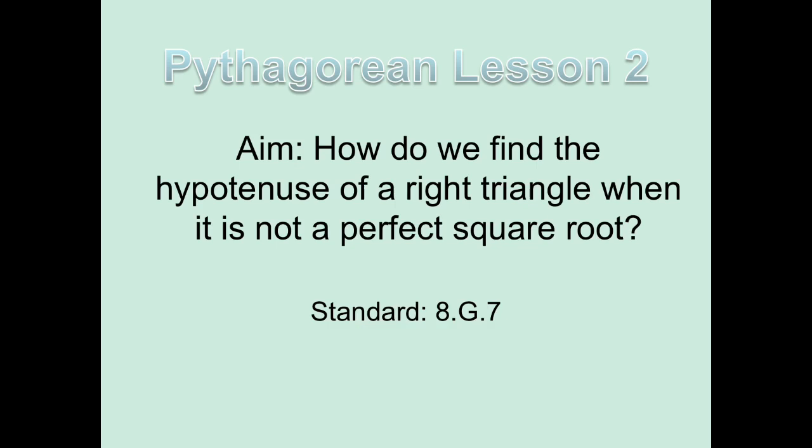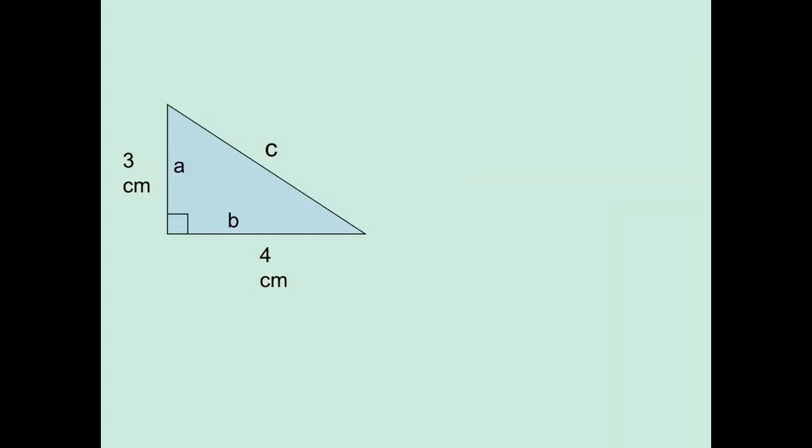Here you see our title screen: Pythagorean Lesson 2. We're going to be talking about how to find the hypotenuse of a right triangle when it's not a perfect square, like I just told you — but it is worth repeating. So, let's do some review first.